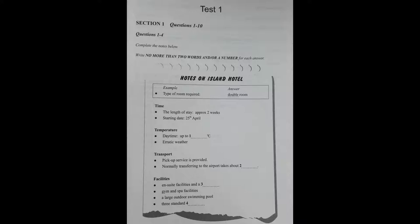Good afternoon, you're through to reception at the Island Hotel in Crete. How may I help you today? Yes, hello there. I'm hoping to book a double room for my wife and myself for about two weeks from the 25th of April of this year. Firstly, could you tell me whether it's particularly hot during this time? The type of room the man requires is a double one. So, double has been written in the space.